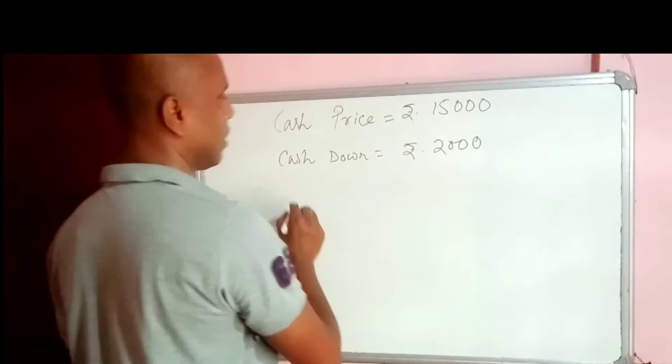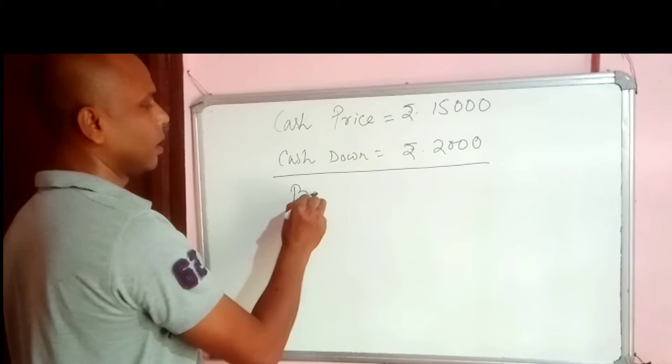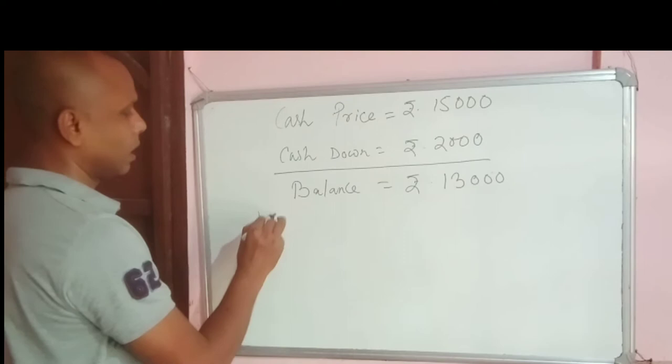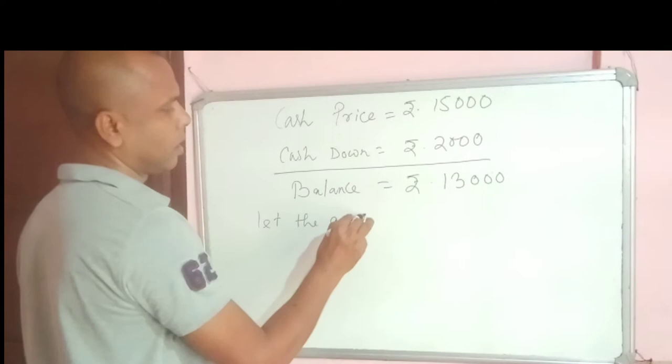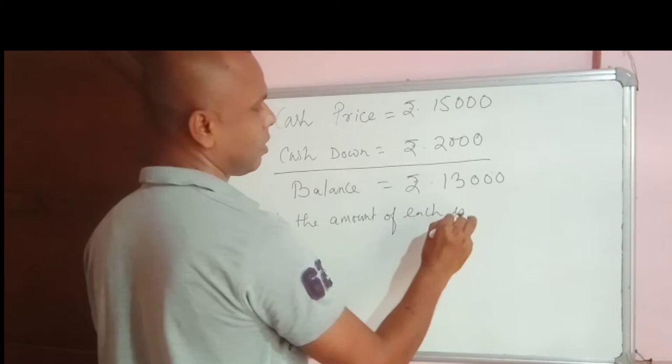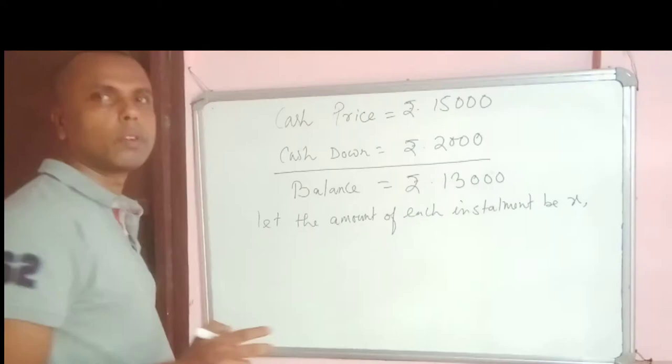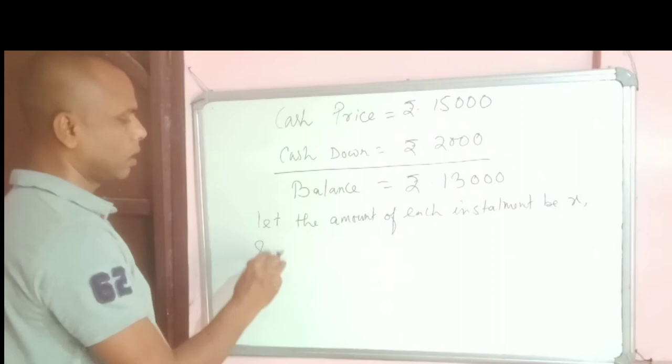Now we will find out the balance remaining which is 13,000. So let the amount of each installment be X and we have got 2 half yearly installments.